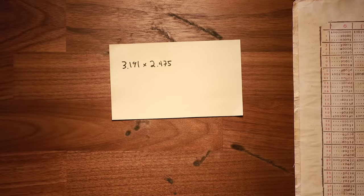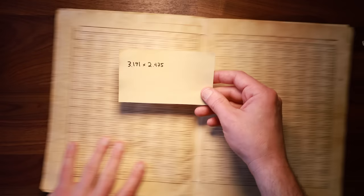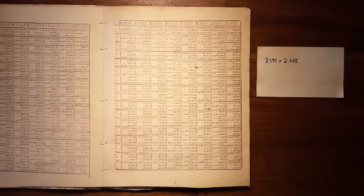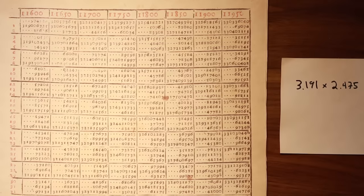Let's say we want to multiply the numbers 3.191 and 2.475. Instead of working out the multiplication by hand, we can use Berge's table to turn this multiplication problem into a much simpler addition problem. First, we find the closest black numbers in Berge's tables and get their red numbers.